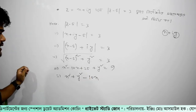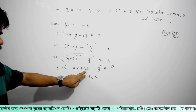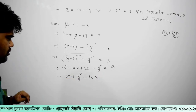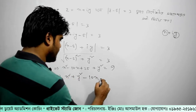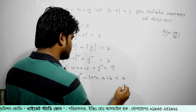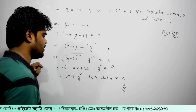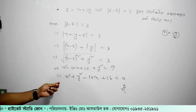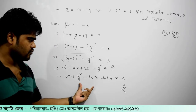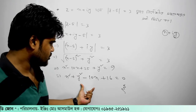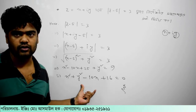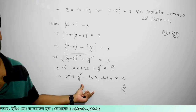Then we have 6, and then 3. Now we have 1² minus 2 and x² minus 2.